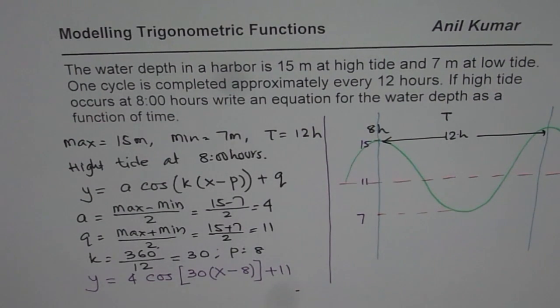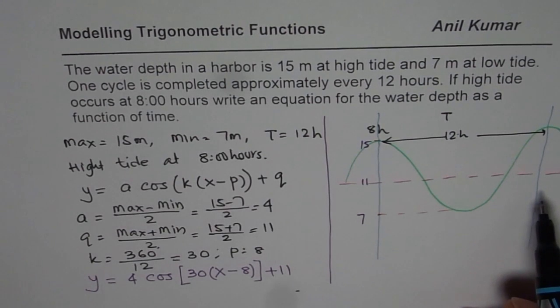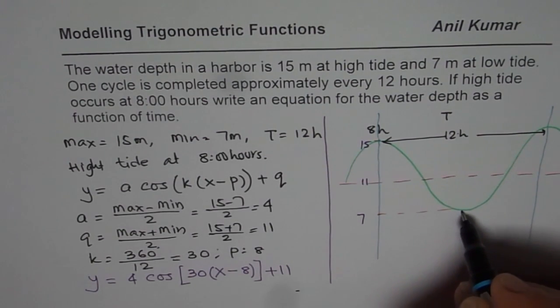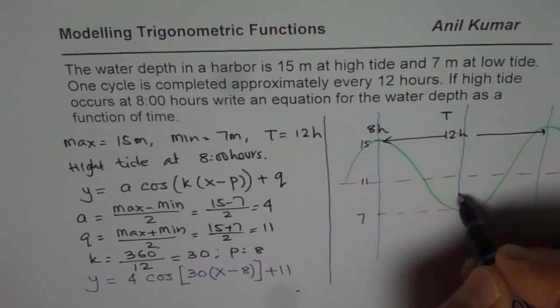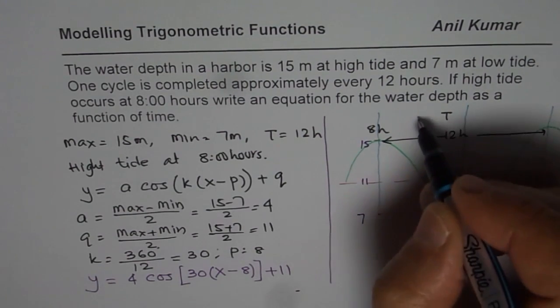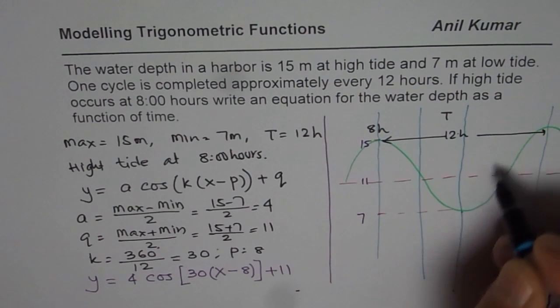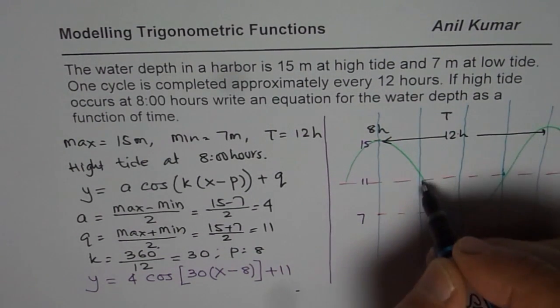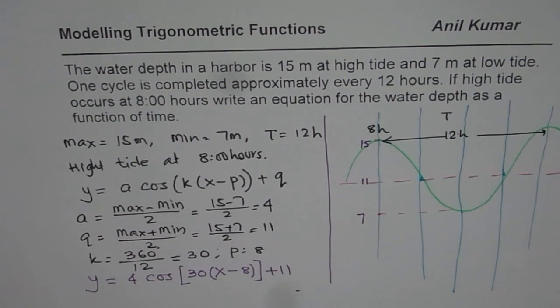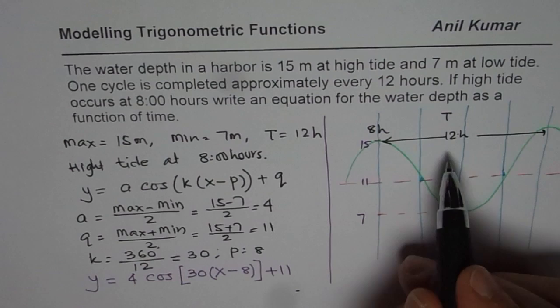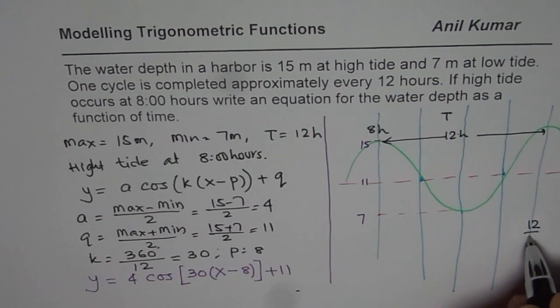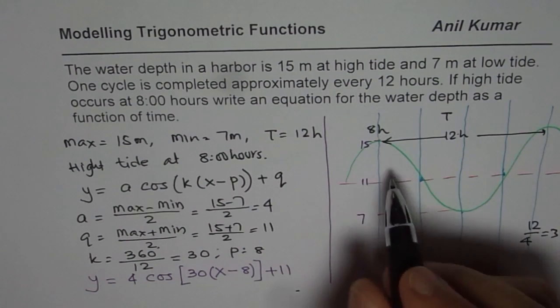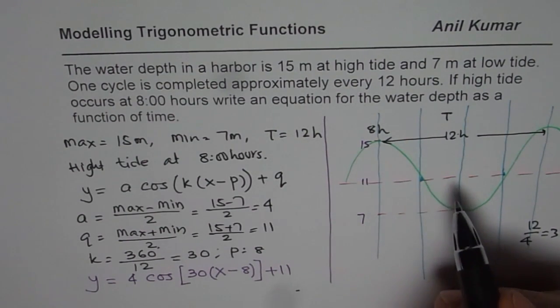Now the idea is whenever you have a sine or a cosine function, it should be divided into 4 parts. So that is the half, and then this is half of half. So it will actually go through this. It should go through this point, half of half. Now what is this quarter of 12? 12 divided by 4 is 3. So each is 3 hours away.